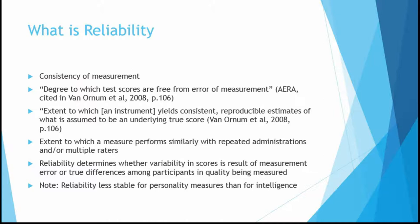Another definition from the textbook is the extent to which an instrument yields consistent, reproducible estimates of what is assumed to be an underlying true score. The idea is that when we're measuring a quality in somebody, there's a score that would accurately indicate what that person's ability or trait level is, and we want to see that we're getting the true score consistently and can reproduce that result over time.